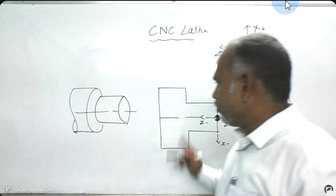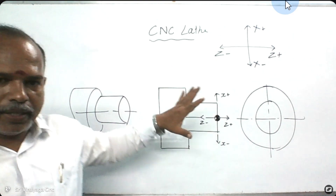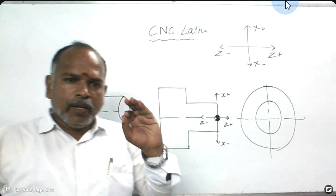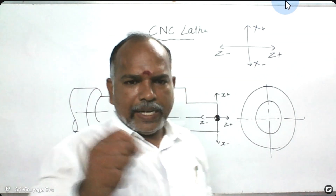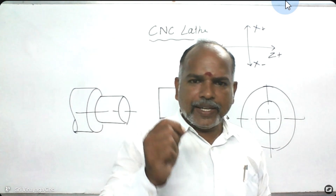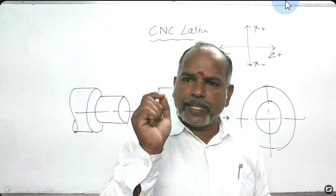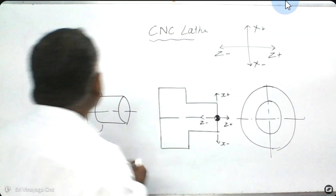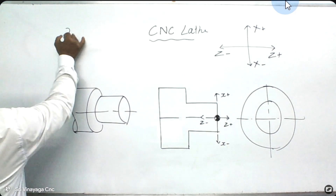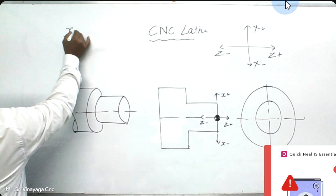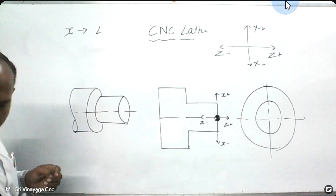Based on this, according to the CNC lathe machine, X indicates diameter and Z indicates length. X will be diameter.